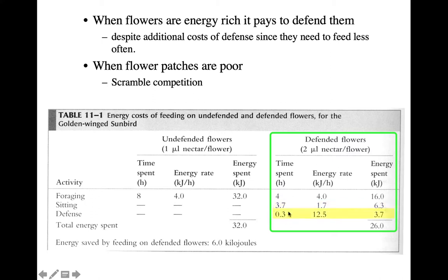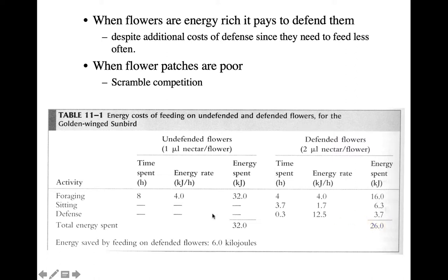With high-value flowers, birds also have to do some defense — about 0.3 hours, less than 30 minutes — and look at the energy rate: that's a highly costly behavior. But since they're not doing it very much, it doesn't really cost much overall. So overall it is definitely more beneficial to have these high-value patches even though you have to do some territorial defense. With low-value flowers, you just don't have that energy capability — it's not worth defending them.